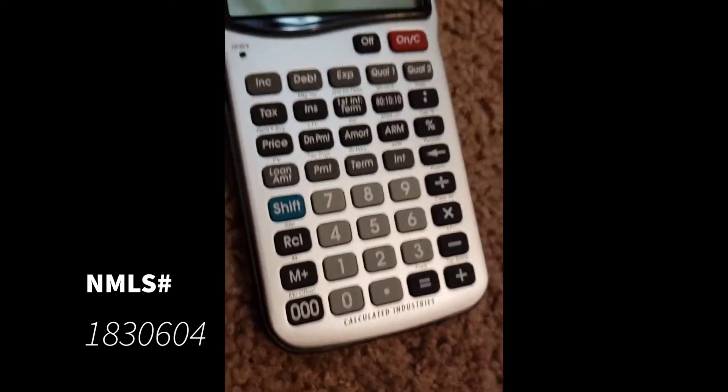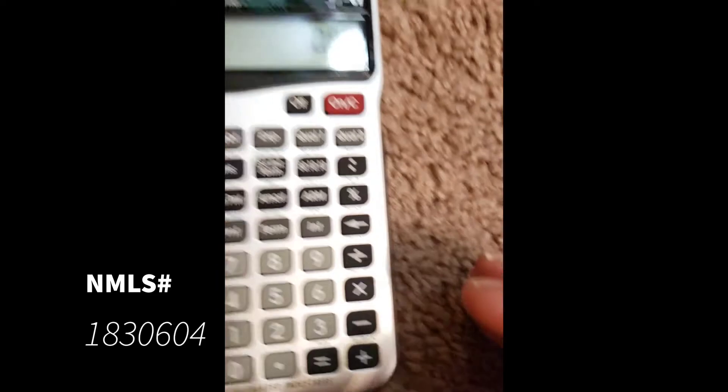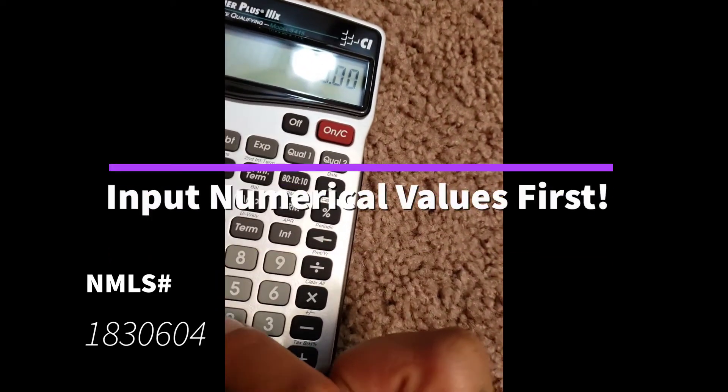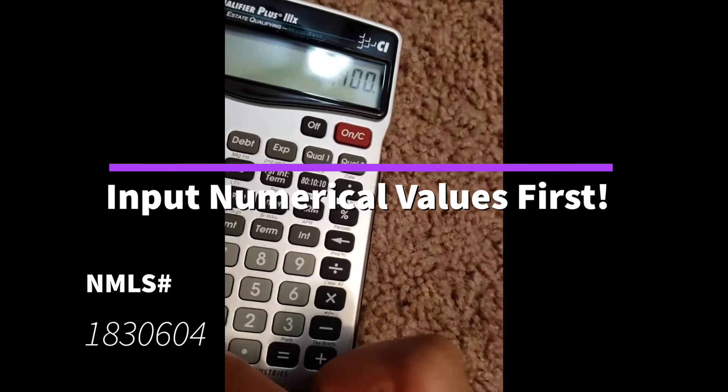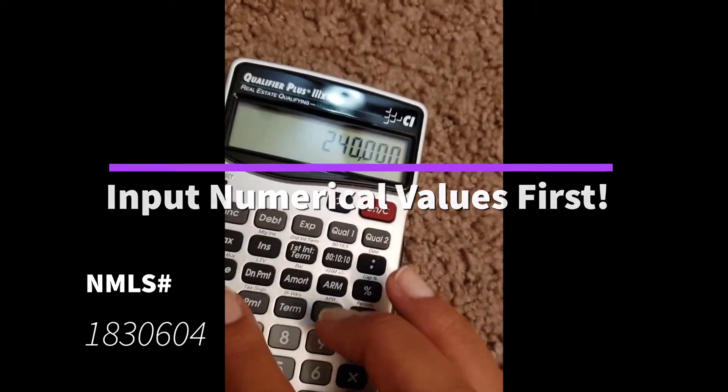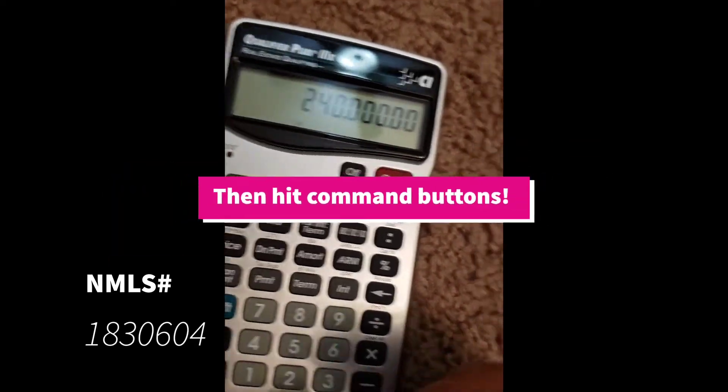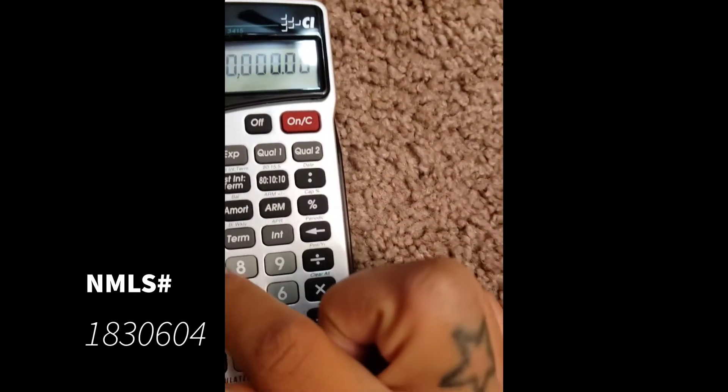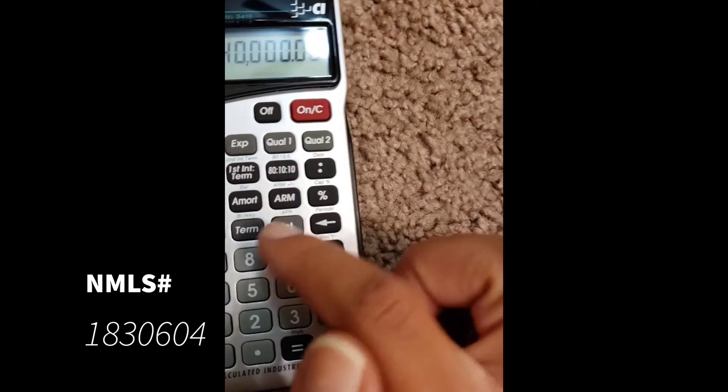Okay, so let me do it real quick. What you're going to do is put in the loan amount. So we'll do $240,000 for example, hit loan amount, then go ahead and enter in. You can do this in any order, by the way.